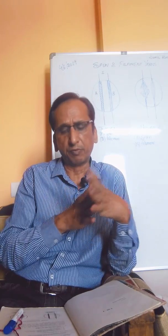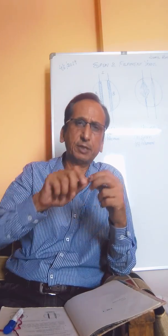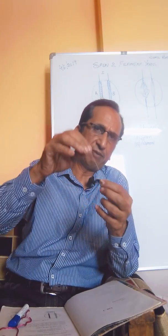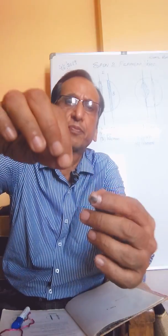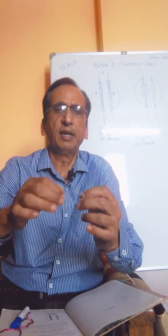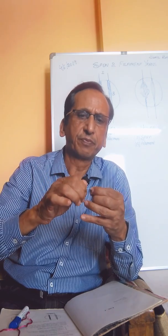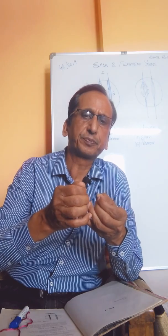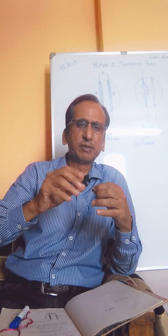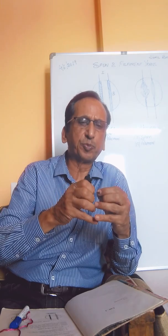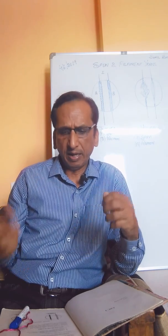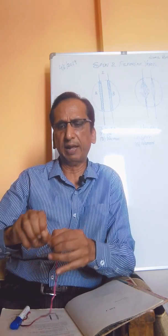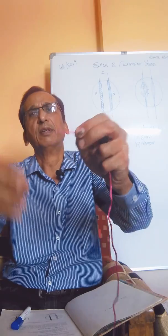Yarn consists of the following forms. One is a number of fibers twisted together. Here we have a small piece of yarn — if you observe and untwist it, you will find it consists of fibers, and when we untwist it, it is broken.